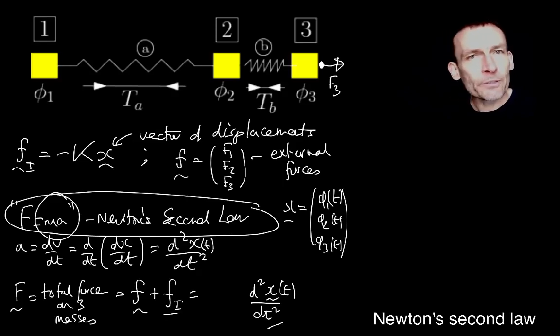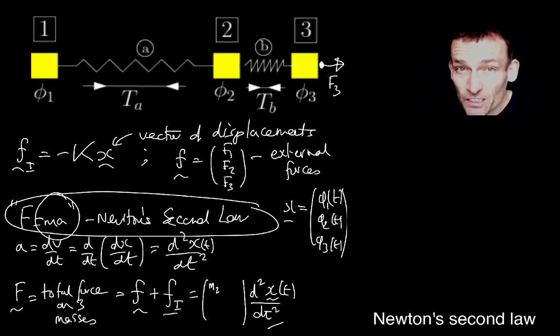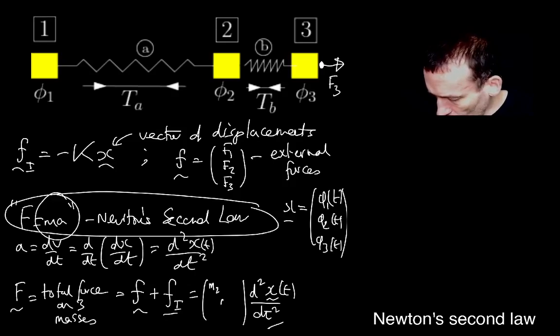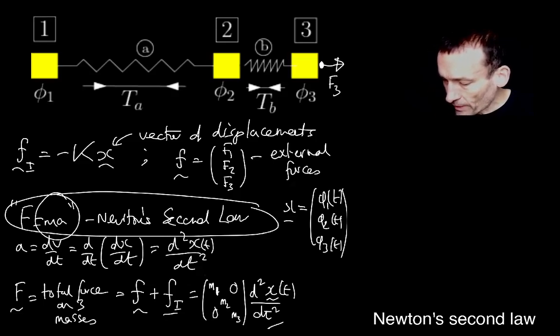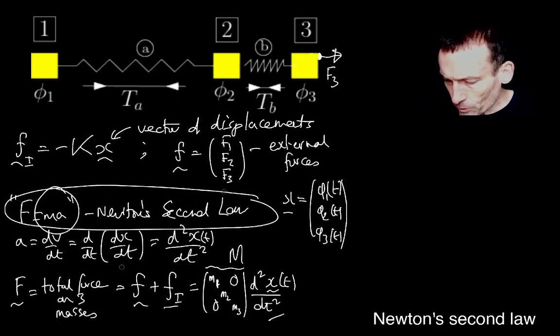So our displacements now are time dependent. And so the acceleration will be given by this quantity here. It's a vector quantity. But of course, we have to incorporate the masses of the system, the ma. And because we're in this vector situation now, we have to introduce a diagonal matrix just like we did for the spring constant matrix. This would be m1, m2, m3 with zeros off the diagonal. And then I call this matrix m, and it's going to be 3 by 3 in this case because there are three masses.